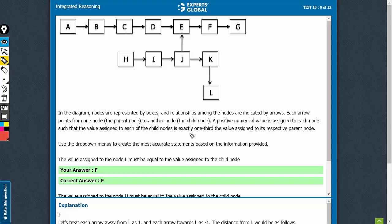The child node gets exactly one-third the value assigned to its respective parent node. We need to know that the value assigned to node L must be equal to which child node.